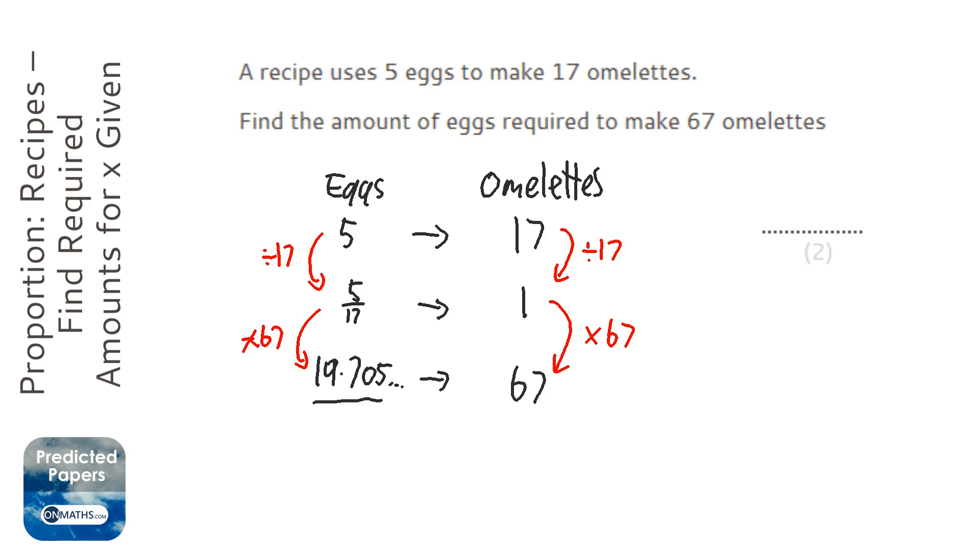Because we need over 19, we will need 20 in total. We'll just have some left over. If we had 19 eggs, it wouldn't be enough. So the answer will be 20.